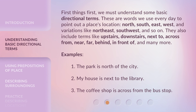First things first, we must understand some basic directional terms. These are words we use every day to point out a place's location. North, south, east, west, and variations like north-east, south-west, and so on.